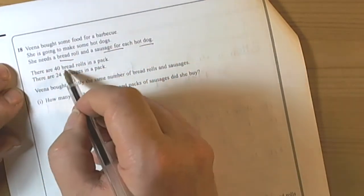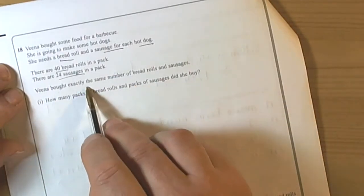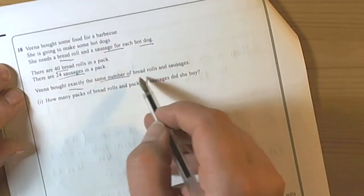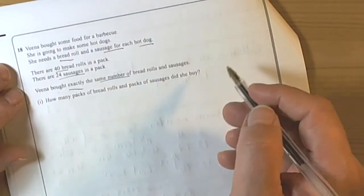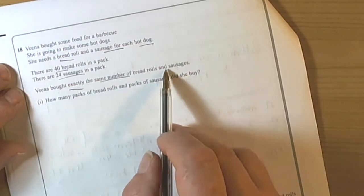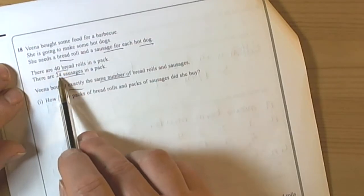There are 40 bread rolls in a pack and 24 sausages in a pack. She bought exactly the same number of bread rolls and sausages. So if she's going to buy exactly the same number of bread rolls and sausages then we've got multiples of 40 and 24.